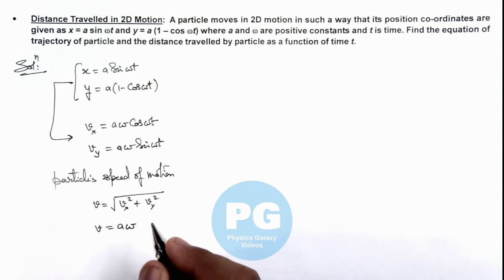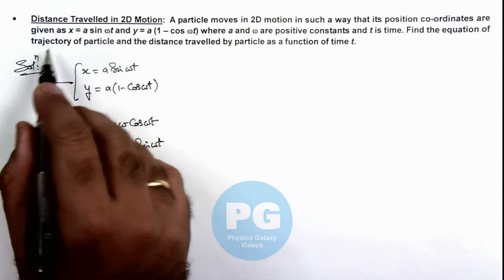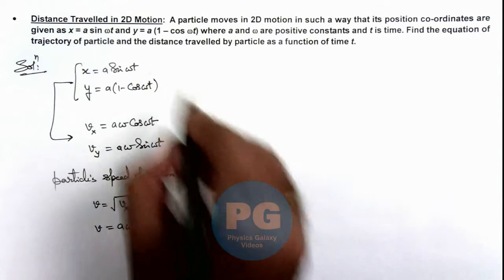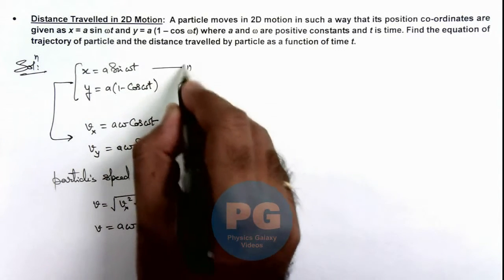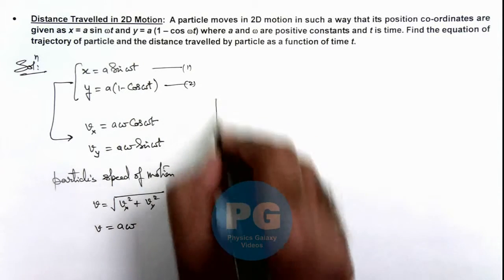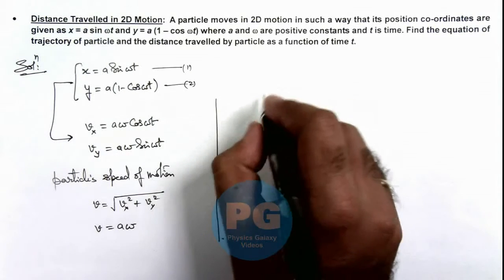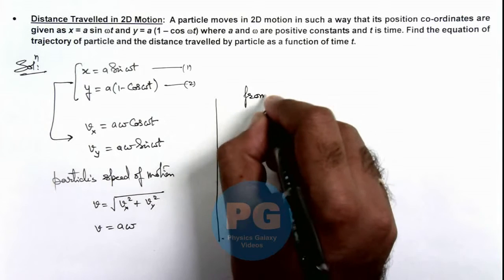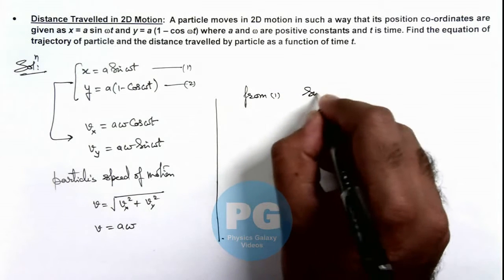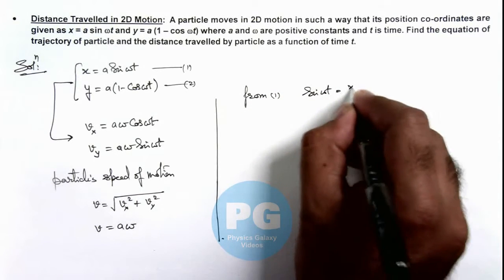If we are required to find the equation of trajectory of particle, that can be obtained from these two equations. From equation 1 we are getting the value of sin(ωt) as x/a.